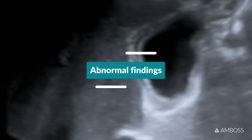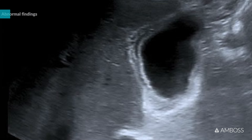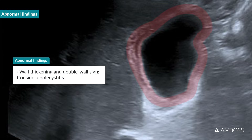Abnormal findings. An abnormally thickened gallbladder wall may suggest acute cholecystitis. As you can see here, this may also result in a layered appearance, with a hypoechoic layer of edema between two hyperechoic wall layers. This is called the double wall sign.